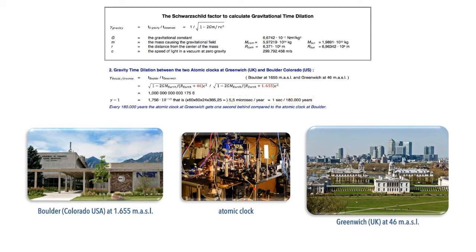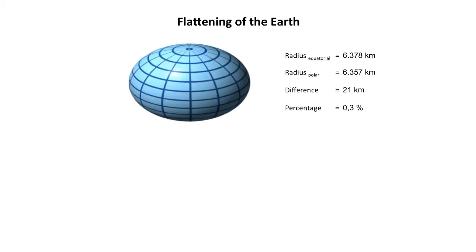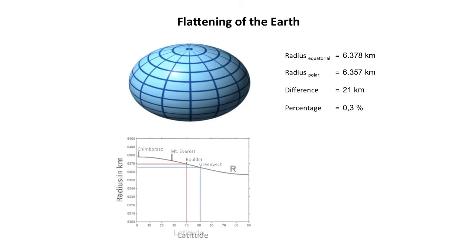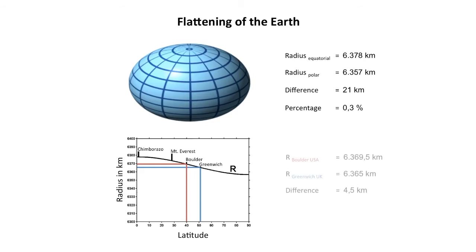But then we overlook one important thing: the flattening of the Earth. The Earth isn't a perfect sphere — it is a little bit squeezed, bulging slightly at the equator. There is a difference of the radius of the Earth at the equator and the poles of 21 kilometers, that is 0.3 percent. Looking at the latitude of Greenwich and Boulder, we see there is a difference in the radius of the Earth of 4.5 kilometers. We can also see that Mount Everest is not the highest point of Earth from the center — actually, on top of the volcano Chimborazo in Ecuador we are on the furthest point from the center of the Earth.